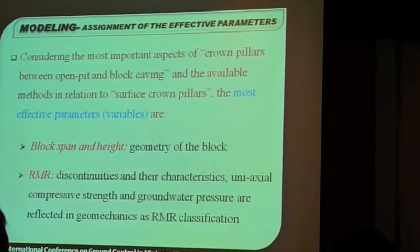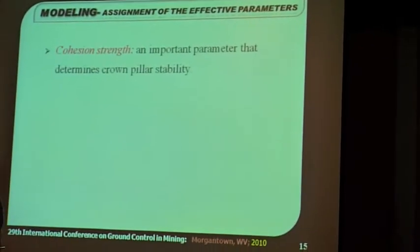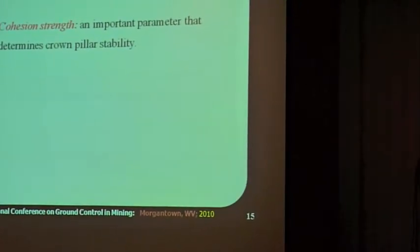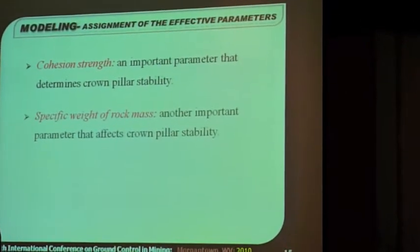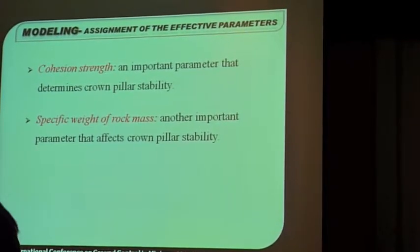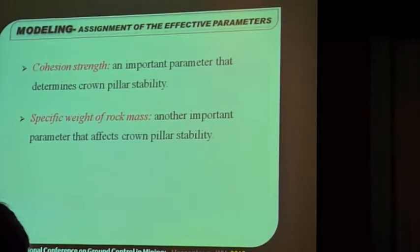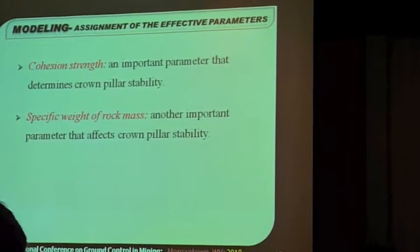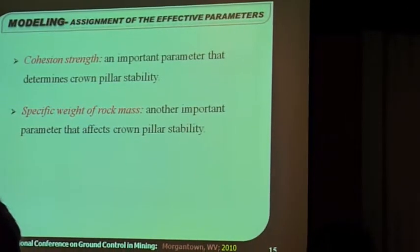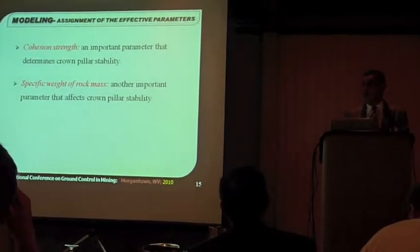That's what we are going to use in here as RMR. And a few other things, cohesion strength, a supposedly important parameter that could affect the crown pillar stability, and specific weight of the rock mass. Another one that these five are chosen to be our important parameters or our values.